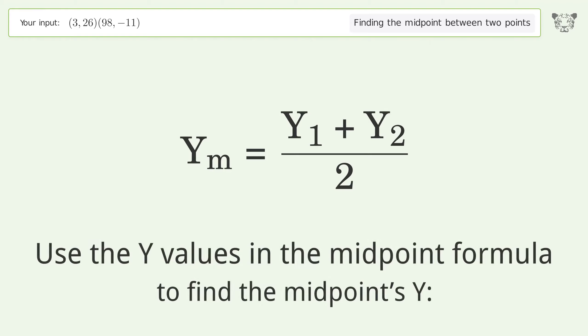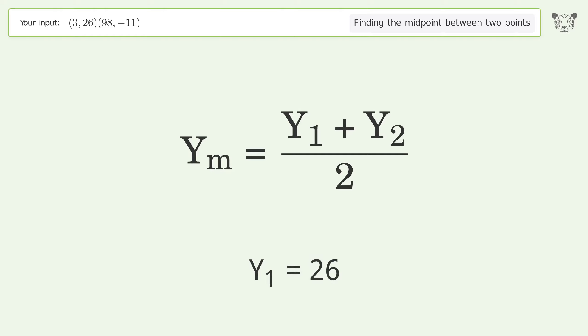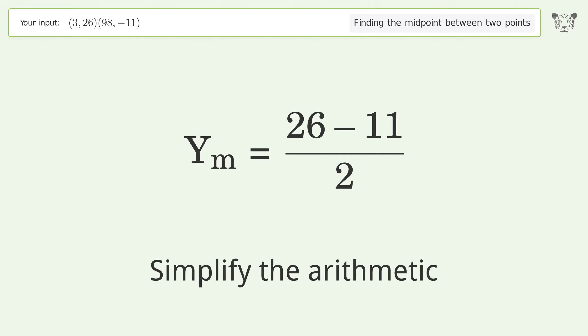Use the y values in the midpoint formula to find the midpoint's y. y1 equals 26, y2 equals negative 11. Simplify the arithmetic.